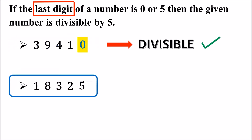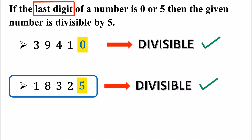Is this number divisible by 5? Let's see the last digit of this number. What is it? It is 5. If the last digit of any number is 5, then the number is divisible by 5. Hence, the given number is divisible by 5.